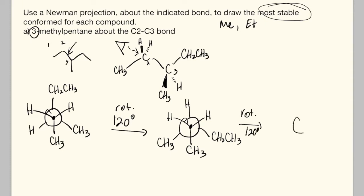The most stable conformation is going to be a staggered conformation. It's only possible to draw three staggered conformations for your Newman projections if you look down one of the bonds.